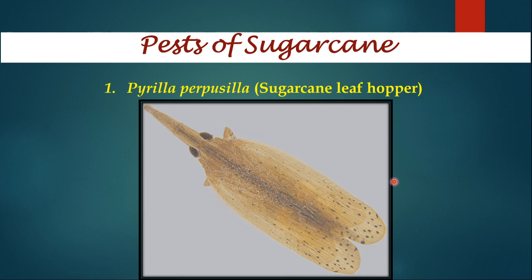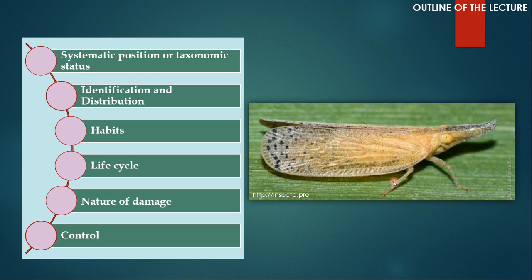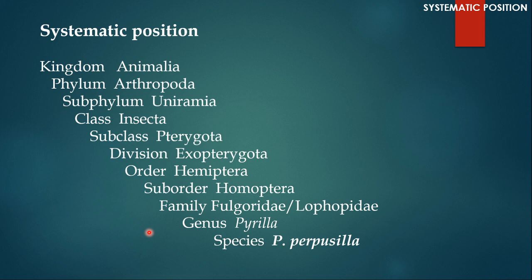First, let us start with sugarcane leafhopper, Pyrilla purpusilla. Pyrilla purpusilla is very commonly found in Southeast Asia. Whenever we want to study the biology of any pest, we need to talk about its systematic position or taxonomic status, ways in which we can identify it, its distribution, habits, life cycle, the ways it can damage the crop, and the control measures that can be taken to keep the damage to a minimum.